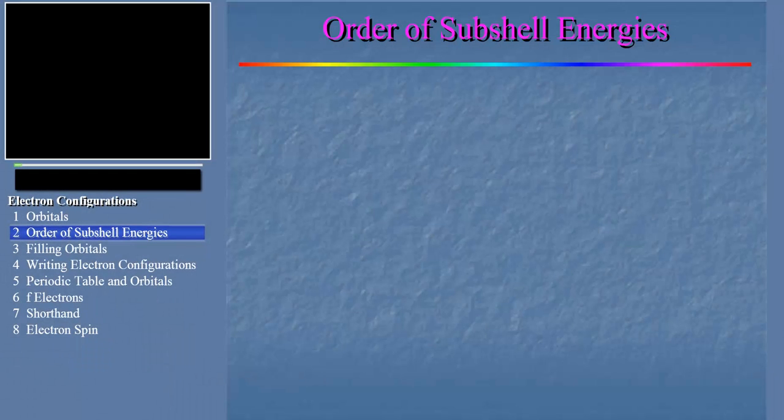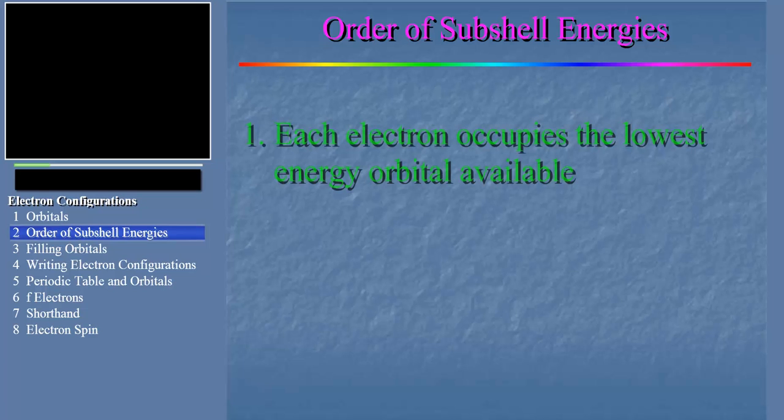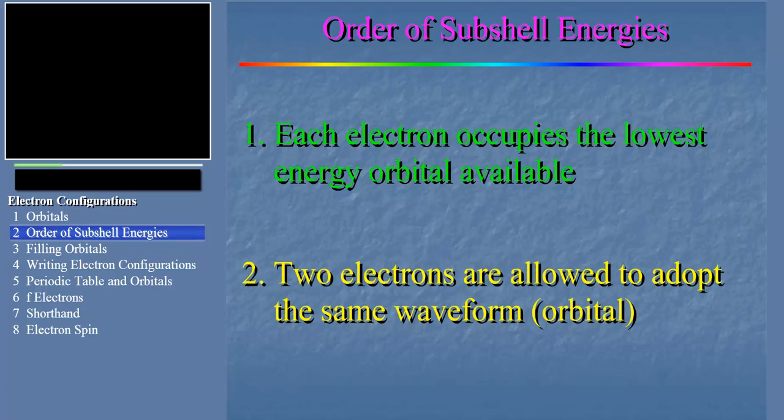So let's talk now about which orbital shapes and energies the electrons adopt in a given atom. There's a simple system for building up the electrons in an atom. It follows the common sense principles we've seen before. First, as we put the electrons on an atom one by one, each occupies the lowest energy orbital that's available. Second, two electrons are allowed to adopt the same waveform. We'll talk about why later. And that's it. If we know the pattern of energies and we follow these two simple principles, we can predict pretty accurately the pattern of electrons in almost any atom. So let's try it.